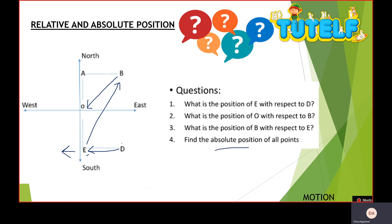Now let me tell you to find the absolute position of all points. As I told you earlier, in the absolute position, the reference points are fixed. You can't change anything in that. So my absolute position is A North, B North-East, E South and D South-East. I hope this part is clear to you.